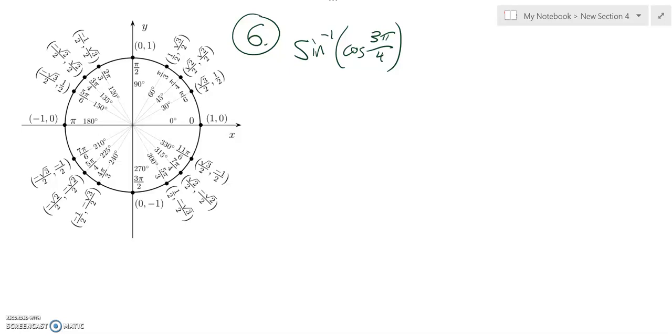This is math 141, practice test 1, question number 6. We are supposed to find the exact value of this arc sine or inverse sine of the cosine of 3 pi over 4. So let's evaluate this stuff one at a time.